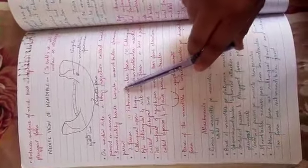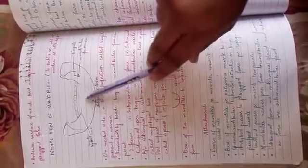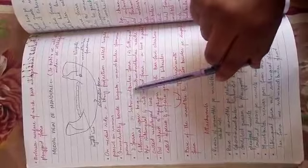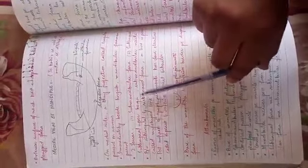There are two fossae. One is the submandibular fossa and one is the sublingual fossa. The sublingual fossa will be above and the submandibular below. Between the sublingual and submandibular fossae, a line is present called mylohyoid line.